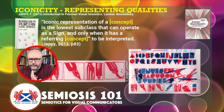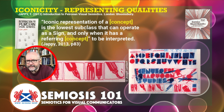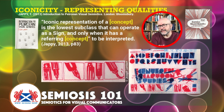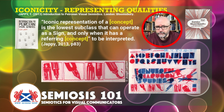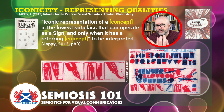Professor Tony Jappy, a real scholar in Peirceian semiotics, says: 'Iconic representation of a concept is the lowest subclass that can operate as a sign, and only when it has a referring concept to be interpreted.' I've replaced the word 'object' in Tony Jappy's quote with 'concept' in designer-centric terms — his book link is in the description below. What we're talking about here is that for something iconic to work, it's got to be related to the message, the meaning of which you want to visually communicate to our target audience.